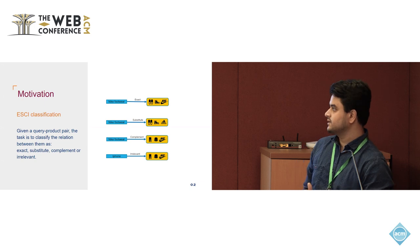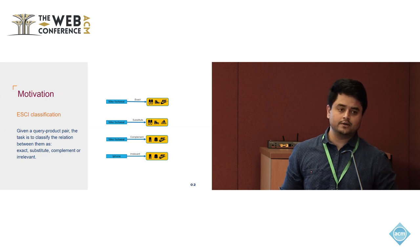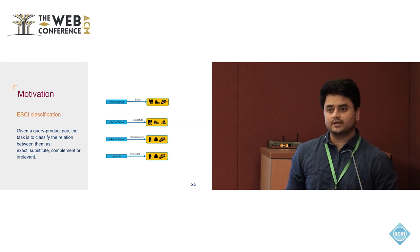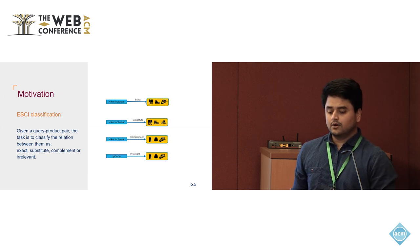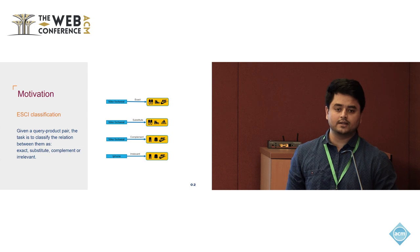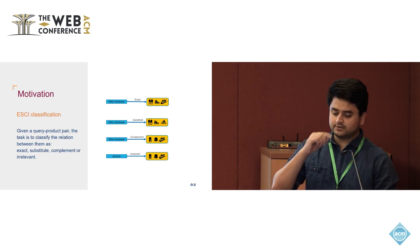The problem of search relevance can be narrowed down to the ESCI classification problem, where given a query-product pair, our aim is to classify the relationship between them as either exact, substitute, complement, or irrelevant. For a query like Nike footwear, an exact relationship indicates the product is a direct match. A substitute relationship implies changing one parameter — for example, substituting the brand and recommending Adidas footwear. A complement relationship means recommending related items like athletic wear from Nike. And irrelevant means recommending something completely unrelated, like recommending Nike products for an iPhone query.